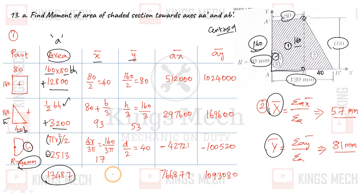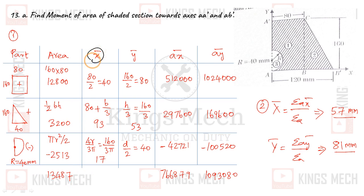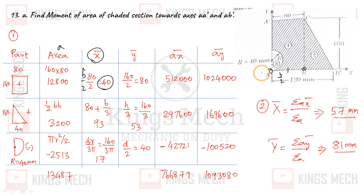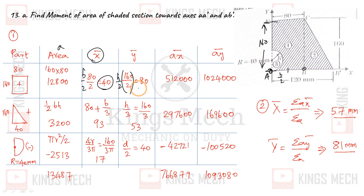After computing all three areas including the negative circle, the total summation of areas gives 13,487 mm². For x̄, the reference is taken from the axis. The x̄ of the rectangle is B/2 = 80/2 = 40 mm. For ȳ, the rectangle starts from A, so ȳ = H/2 = 160/2 = 80 mm. Multiplying these gives 512,000 and 1,024,000.